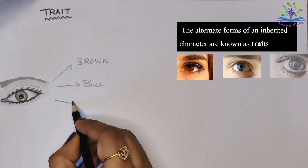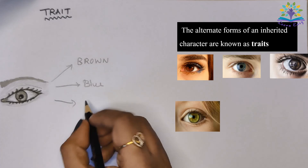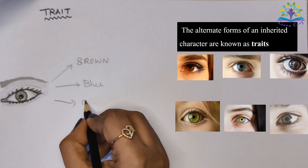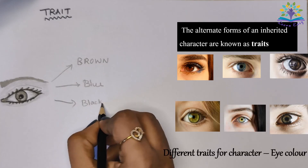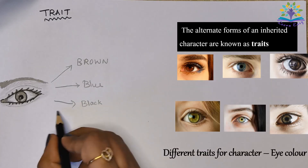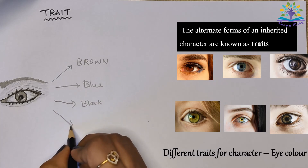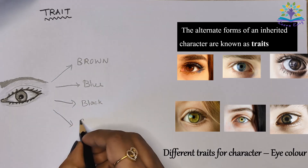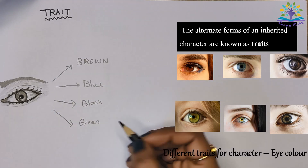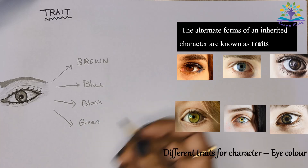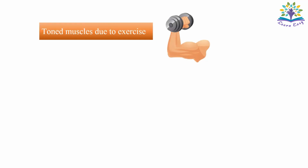For example, eye color can be of different shades: brown, blue, green, black, grey — and these are known as traits for this character.